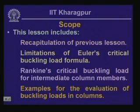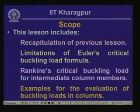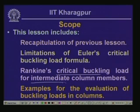The scope of this lesson includes recapitulation of the previous lesson, where we introduced the concept of buckling and stability and discussed Euler's critical buckling formula. We will look into some more aspects of that, including the limitations of Euler's critical buckling load formula, and this lesson also includes Rankine's critical buckling load for intermediate columns.